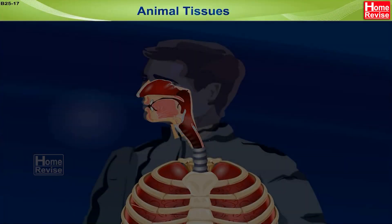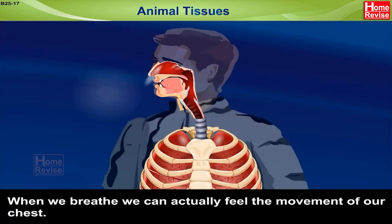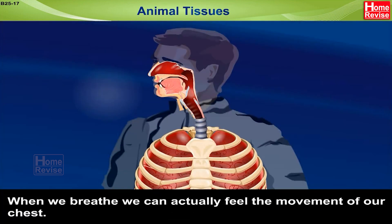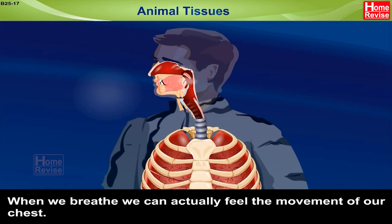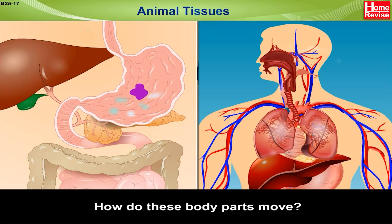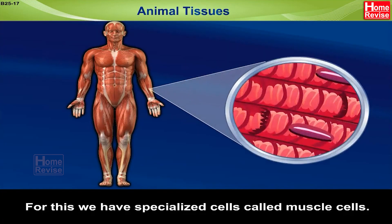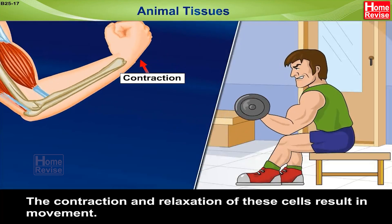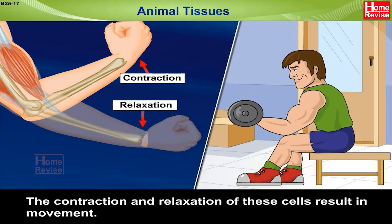Animal Tissues. When we breathe, we can actually feel the movement of our chest. So how do these body parts move? For this, we have specialized cells called muscle cells. The contraction and relaxation of these cells result in movement.